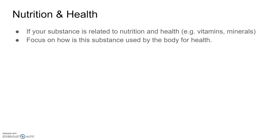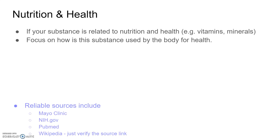If your substance is related to nutrition and health — for example, vitamins, minerals, or any of the macronutrients you would find in food — you want to focus on how this substance is used by the body for health. Reliable sources when searching for this would be the Mayo Clinic, NIH.gov, PubMed, and Wikipedia is actually a pretty good source for a lot of this. You just want to verify the source link. When you go to the Wikipedia article, next to the information in brackets there will be a number, and if you click on that number it will take you down to the references at the bottom. So you just want to verify those references.